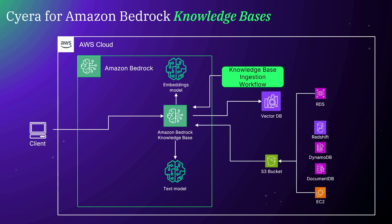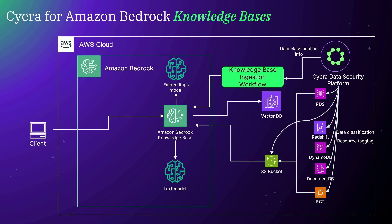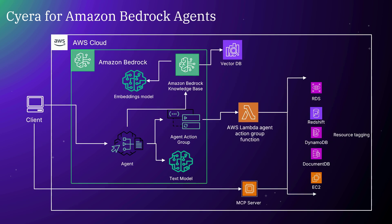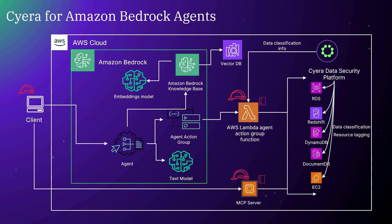The next example is the knowledge base ingestion workflow — same approach. Sayera classifies the data. Your workflow uses either tags on the data stores or interacts directly with Sayera to get this information into authorization decisions, controlling what data gets into your RAG data store — again enforcing governance policies automatically across your pipelines. And once you've trained your model and built your knowledge base, don't stop there. While building your agent, enforce the same data-centric controls at runtime when your agent and tools are accessing the data. Make your tools aware of end-user identity and authorize each and every single request to the data downstream, based on deep, extensive knowledge of your data from Sayera.